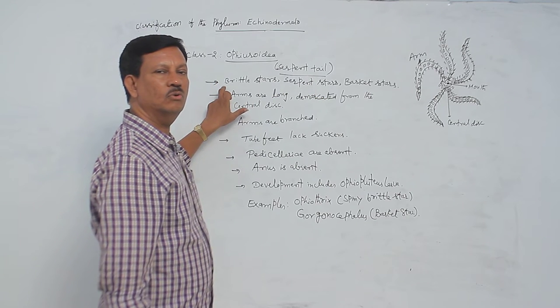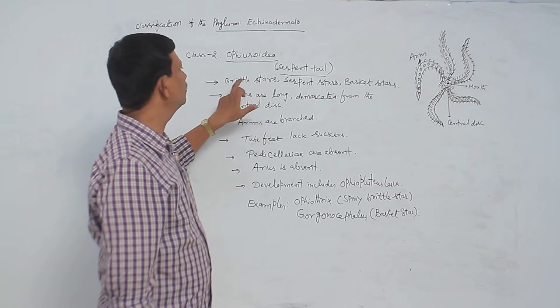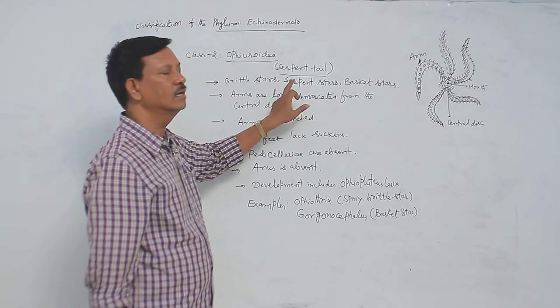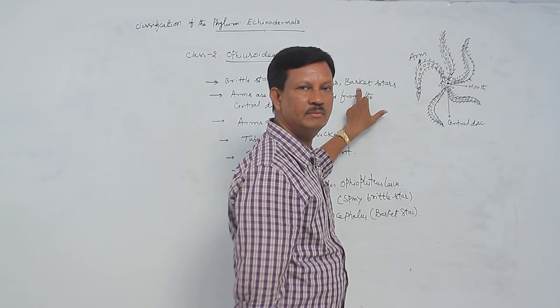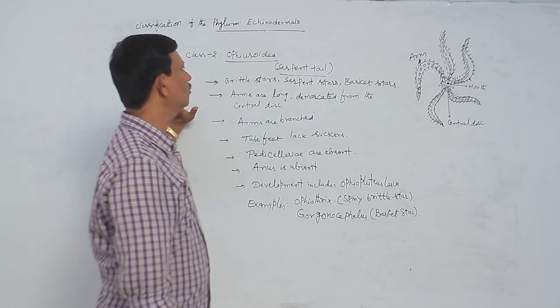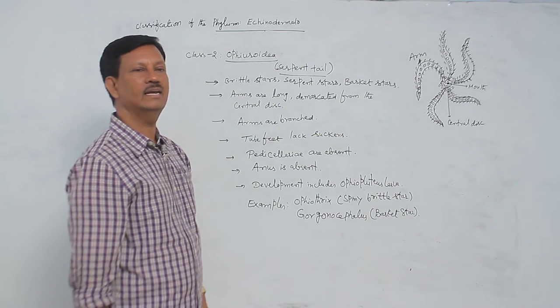These are also commonly known as brittle stars or serpent stars or basket stars. There are different names present we can call it, but commonly known as the serpent tail animals.